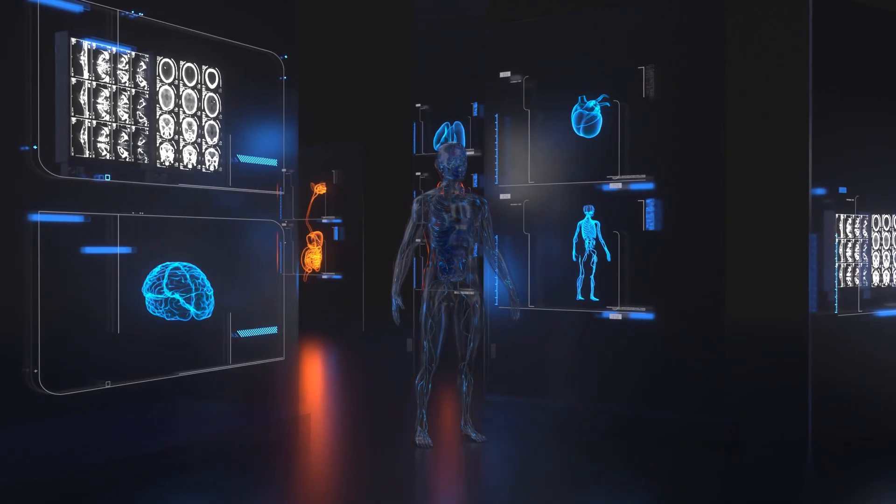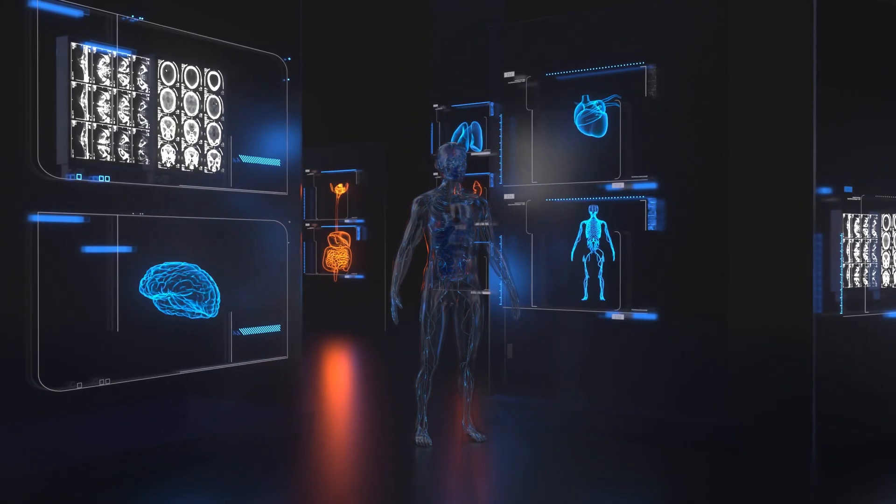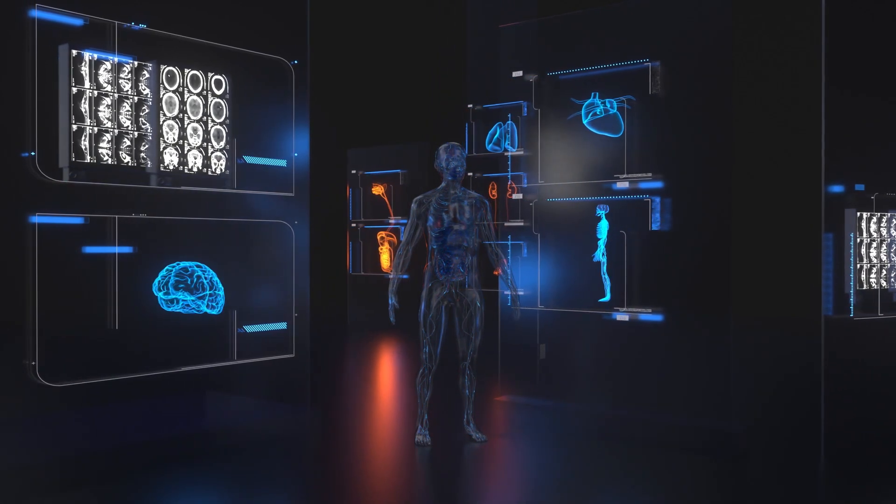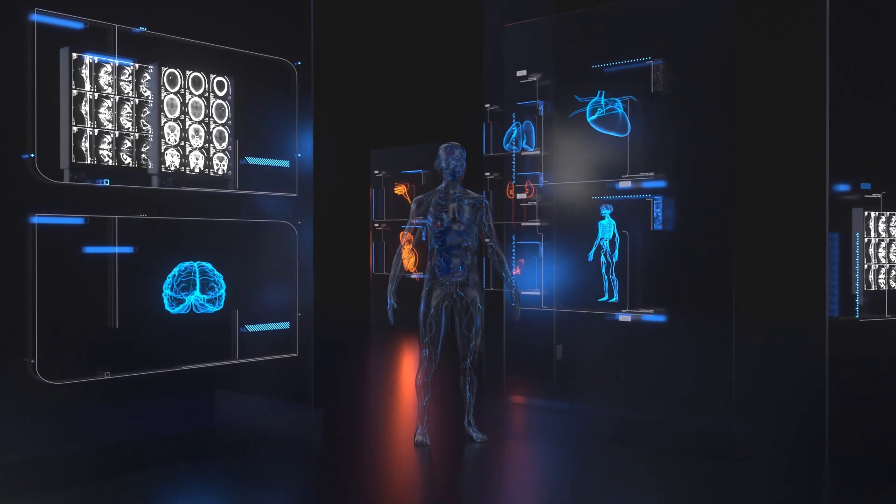The immune system protects every organ in the human body through carefully regulated responses. It is a complex organization of cells, tissues, and cell secretions.